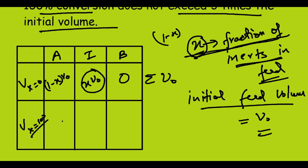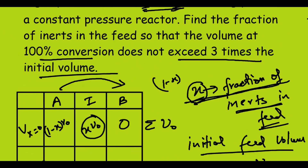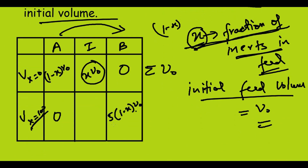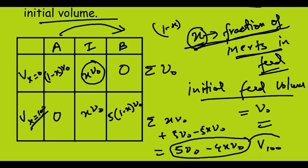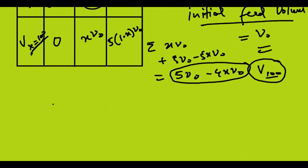At 100% conversion, A becomes 0 because it is entirely converted to B. For A giving 5B, the volume of B is 5 × (1 - x)·V₀. The inerts remain x·V₀. So the total volume at full conversion is xV₀ + 5(1 - x)V₀ = xV₀ + 5V₀ - 5xV₀ = 5V₀ - 4xV₀.